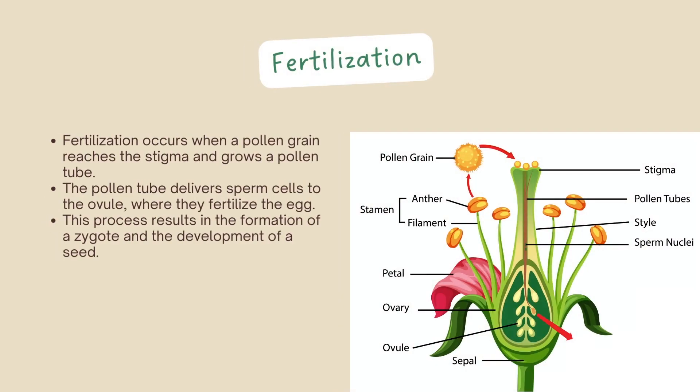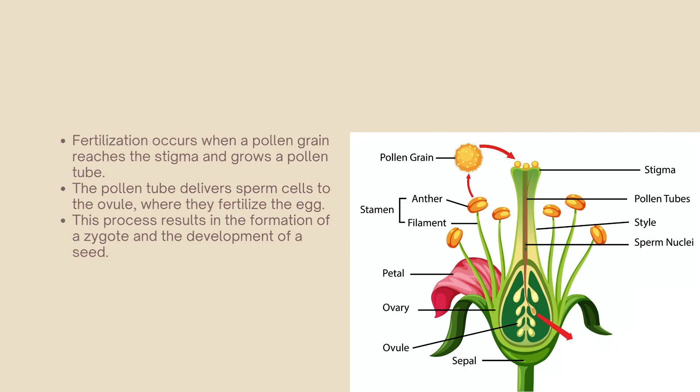Once pollen reaches the stigma, it grows a pollen tube, allowing the sperm cells to reach the ovule. This is where fertilization occurs, as the sperm cells fertilize the egg, resulting in the formation of a zygote. This process initiates the development of a seed, which holds the potential for new life.